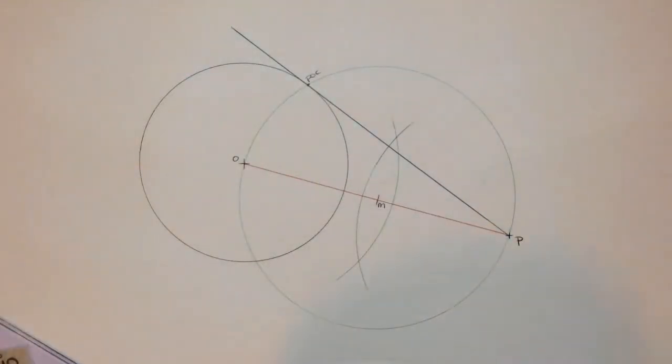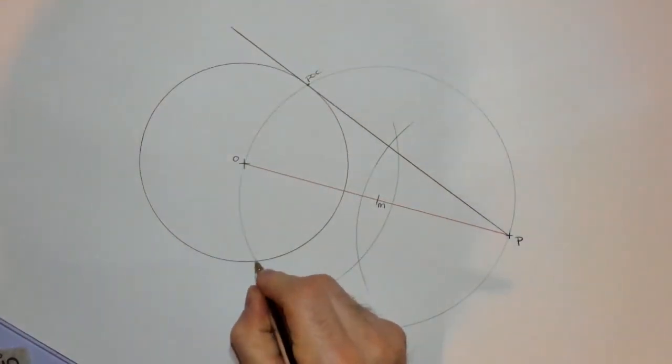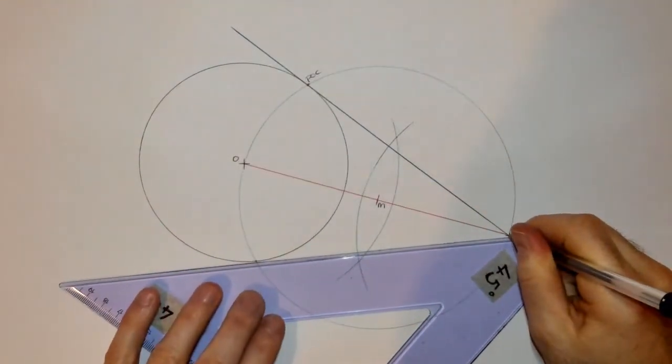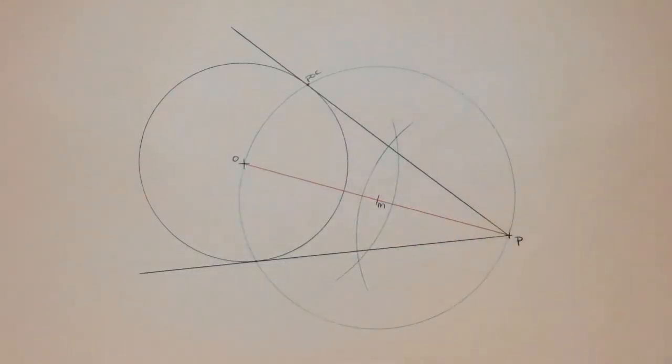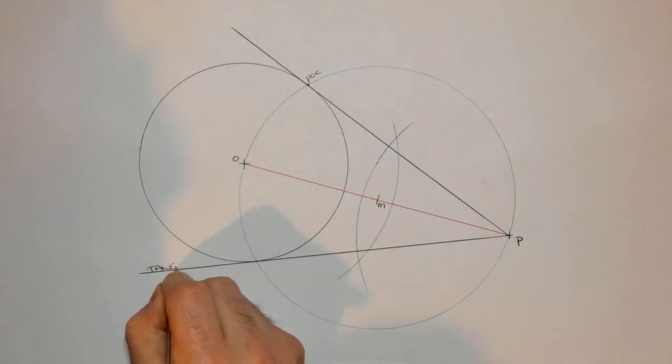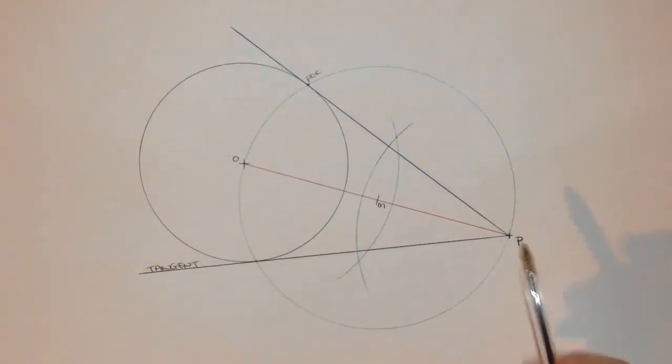And once again, where that intersects the circle, I have now found my tangent line. So as you can see, from the point P, we can produce two tangents.